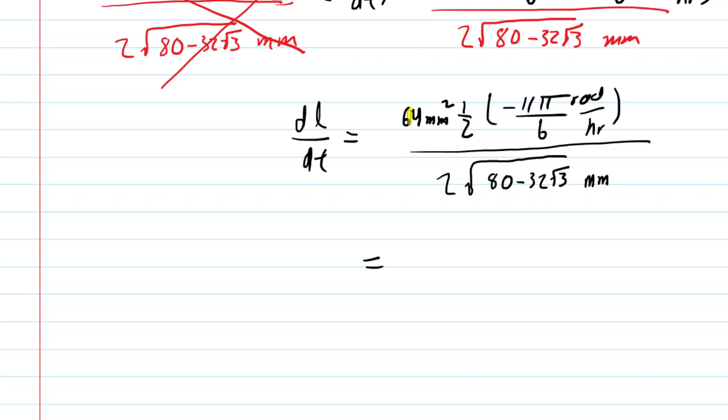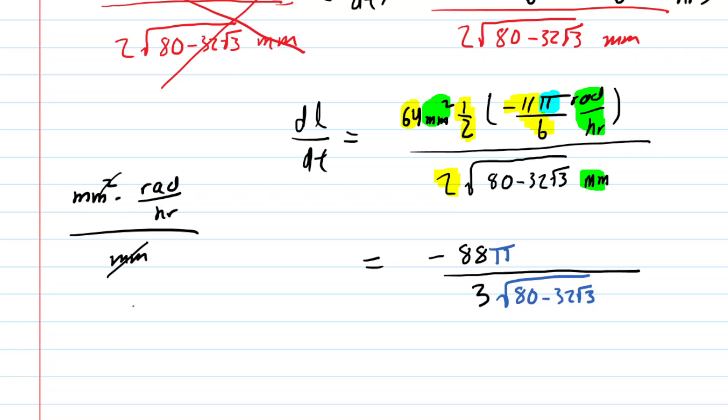Now it's just a matter of simplifying dimensions, simplifying the arithmetic here. We'll do the arithmetic first. You're going to do 64 times 1/2 times negative 11/6, and then divide all of that by 2. You might want to do that on a calculator. And when you do that, you get negative 88/3. So you'll have negative 88/3 in the numerator. You still have π up there, so make sure you put the π. And then in the denominator, you have that square root term. Now let's look at the dimensions. We have millimeters squared multiplied by radians per hour over millimeters. You'll be able to cancel a factor of millimeters, so then you're just left with millimeters times radians, which is still millimeters. And then you put that over hours, so this will be in millimeters per hour.